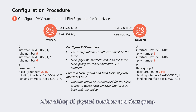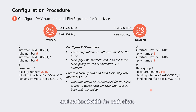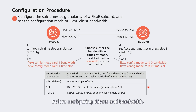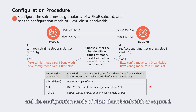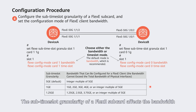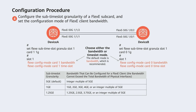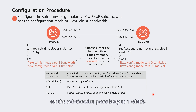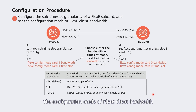After adding all physical interfaces to a flexi group, configure flexi clients for flexi physical interfaces and set bandwidth for each client. Before configuring clients and bandwidth, select the sub time slot granularity of a flexi subcard and the configuration mode of flexi client bandwidth as required. The sub time slot granularity affects the bandwidth that can be configured — for example, if the bandwidths to be configured are 4 Gbps, 15 Gbps, 20 Gbps, or 30 Gbps, set the sub time slot granularity to 1 Gbps.